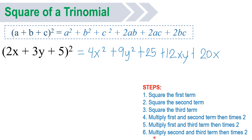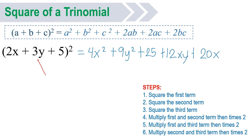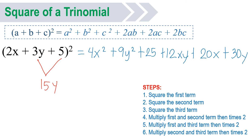Then for the last step, multiply second and third term. Second term is 3y, third term is 5. 3y times 5, that will be 15y. Then times 2 — 15y times 2, that will become 30y. Then observe if you can combine like terms. There are no like terms. So that's it, that will be your answer.